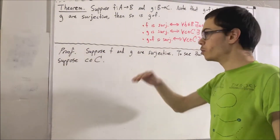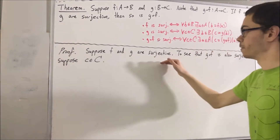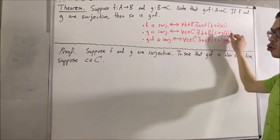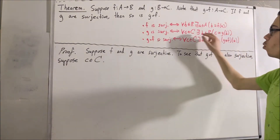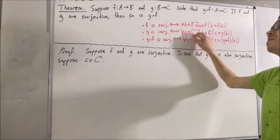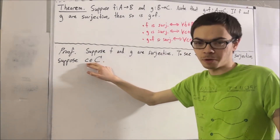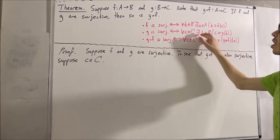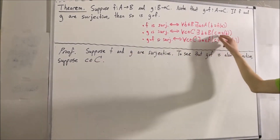Now let's use the fact that g is surjective. Since g is surjective, we know for a fact that this statement is true, and we know that this statement works for every element in C. So it must work for the c that we have in our proof. What that means is we can choose some element, say b, in B, such that c equals g of b.